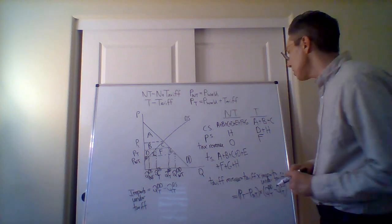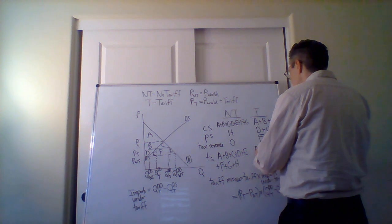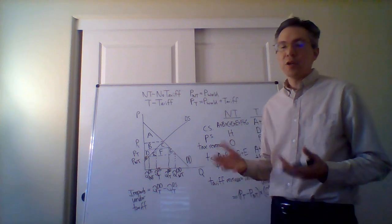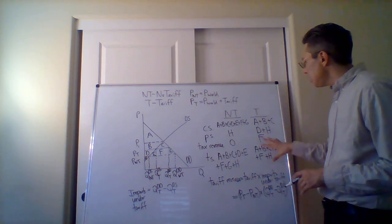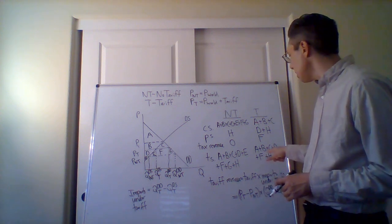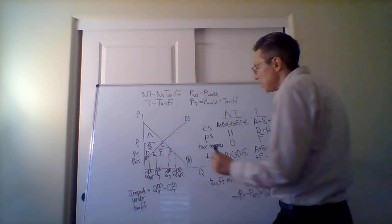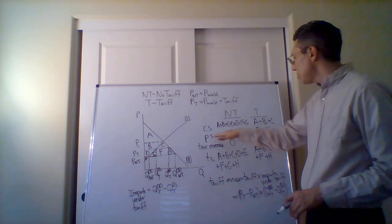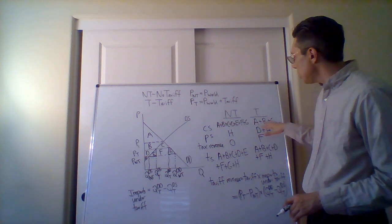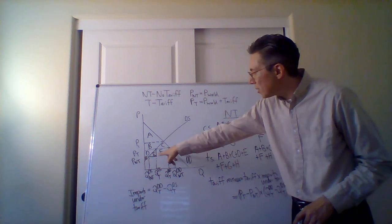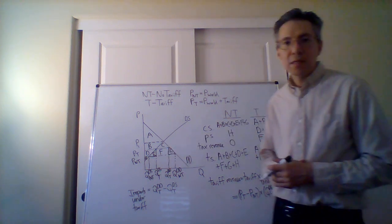So in terms of total surplus under the tariff, we add it up and get A plus B plus C plus D plus F plus H. Comparing the two cases, the no-tariff total surplus is higher. The difference corresponds to areas E and G. So under the tariff, producers do better — they gain area D — but consumers lose so much that overall the total surplus goes down by E and G. That is the deadweight loss from the tariff.